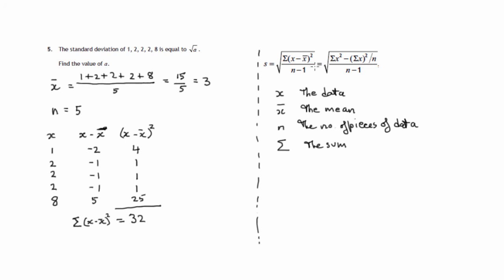And we need to divide that by n minus 1. Now, n was the number of pieces of data, which we said was 5. So, we have to divide that by 4. So, to get s, we take the sum of these squared deviations from the mean and divide it by 1 less than the number of pieces of data. So, that'll be 4. And 4 into 32 is 8. Now, that's not s. s is that square rooted. And remember, in the question, they're saying that the standard deviation is equal to the square root of a. So, a must be 8.